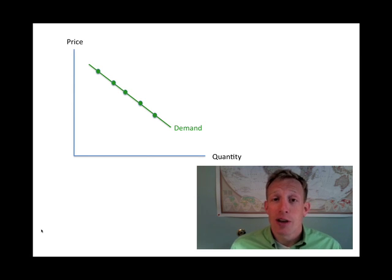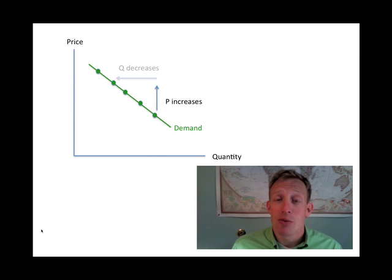If the price of an iPhone goes up, people will buy fewer of them. If the price of oranges goes up, people will buy fewer of them. On the other hand, if the price drops, people tend to buy more of them. This is why things go on sale.